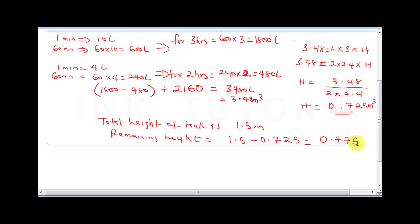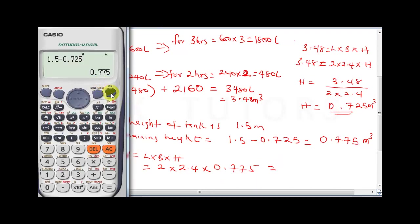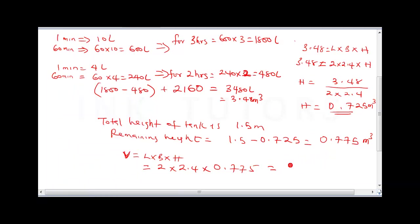To find the time to fill the remaining 0.775 meters, first calculate the remaining volume: 2.4 times 2 times 0.775. Using the calculator: 0.775 times 2 times 2.4 gives 3.72 meter cubed, which equals 3720 liters.